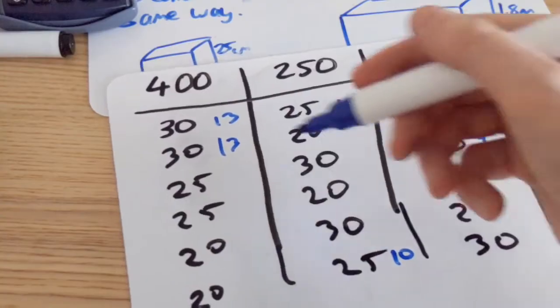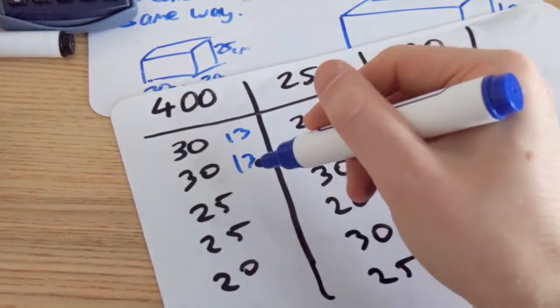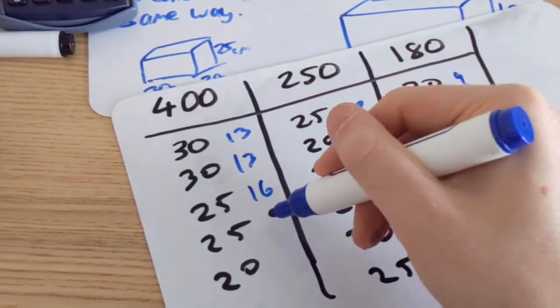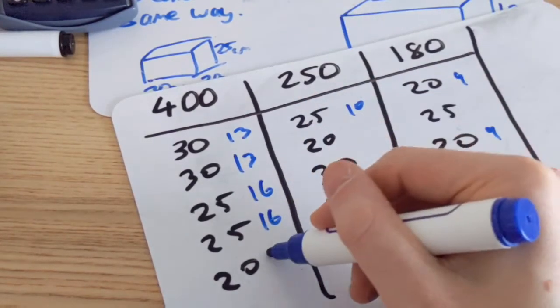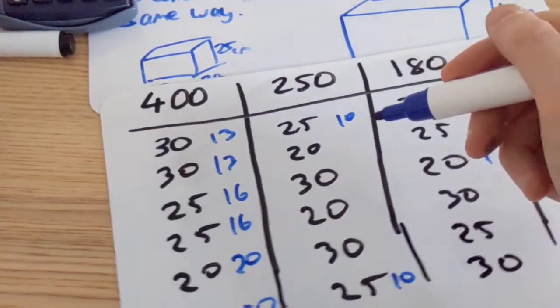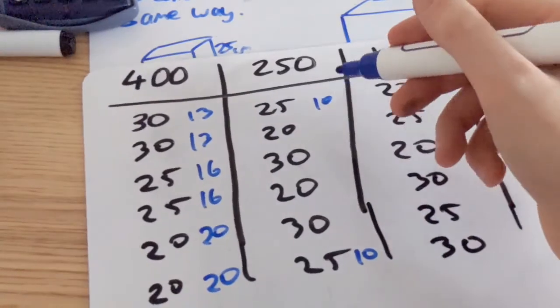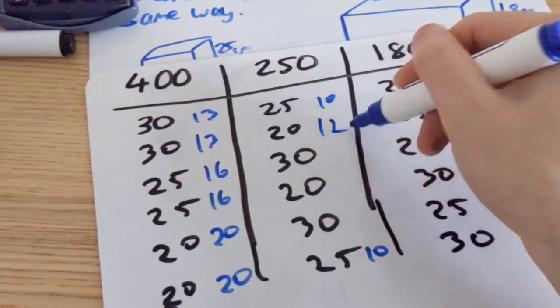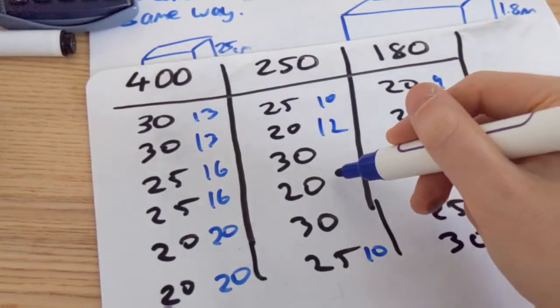If I do 25 into 400, that gives me 16. So I've got another 16 there. And the 20 is 20, that's also 20. And then I've got 20 there. If I do that, it would be 12. If that was 12, it means that this is also 12.